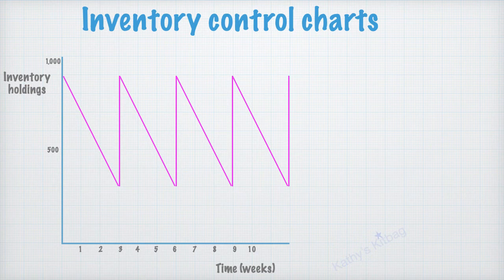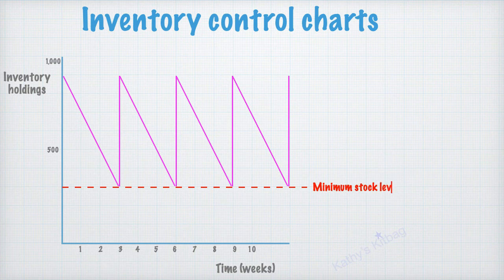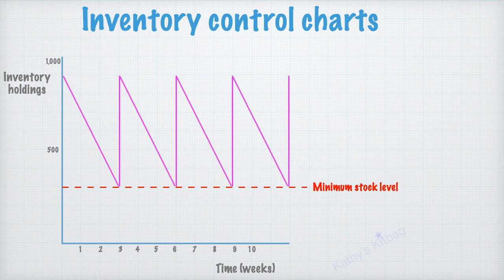So from this chart you can actually read off a couple of things. So firstly if you look at the bottom you can see that line that you can draw along the bottom points of the chart is known as the minimum stock level.